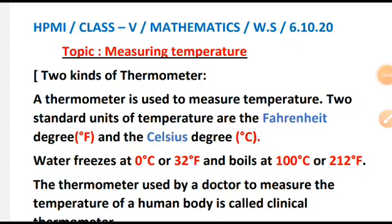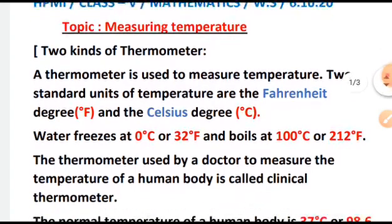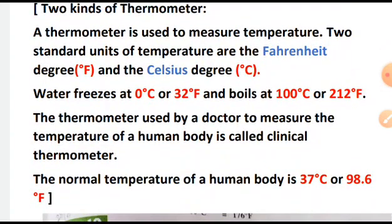Now students, this is your worksheet. Here you have some introduction on two kinds of thermometer. A thermometer is used to measure temperature. Two standard units of temperature are degree Fahrenheit and degree Celsius. Water freezes at 0 degree Celsius or 32 degree Fahrenheit, and boils at 100 degree Celsius or 212 degree Fahrenheit. The thermometer used by a doctor to measure the temperature of a human body is called the clinical thermometer. The normal temperature of a human body is 37 degree Celsius or 98.6 degree Fahrenheit.